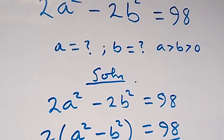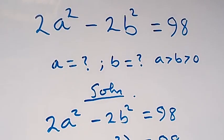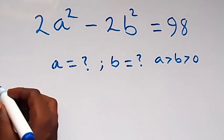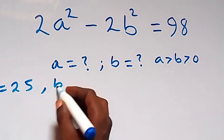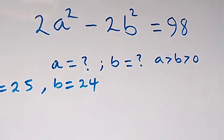Then to check if this is the correct solution, from what we have here we have 2a squared minus 2b squared equals to 98. And here we have a to be equals to 25 and b to be equals to 24. Now let's substitute back here.